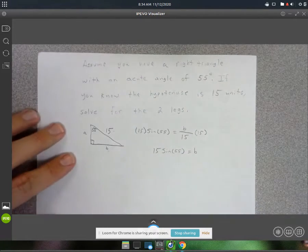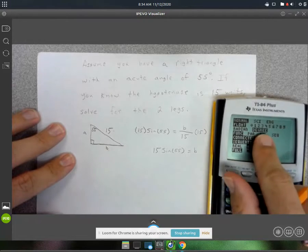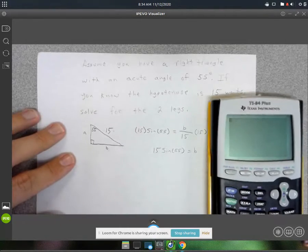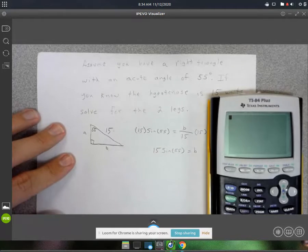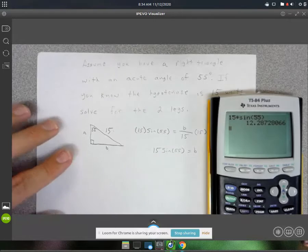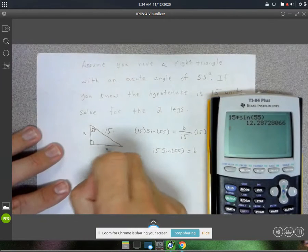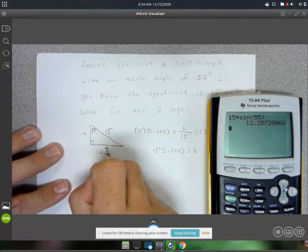Again, make sure your calculator is in degree mode. I think on your online calculators you might have to reset that every time. So 15 times sine of 55 gives us 12.29. So B equals 12.29.